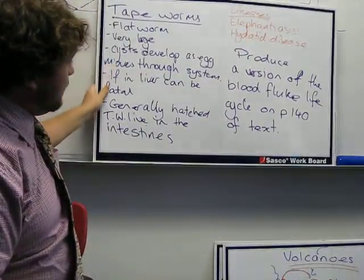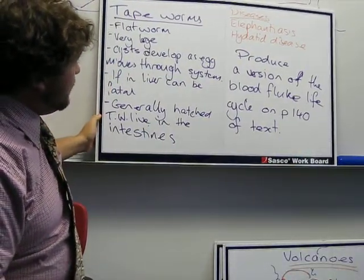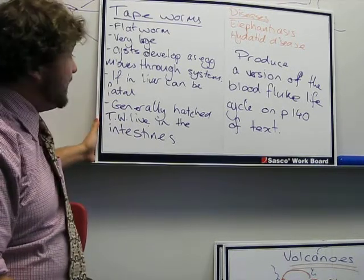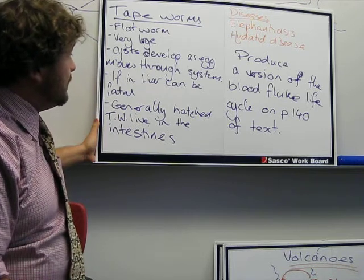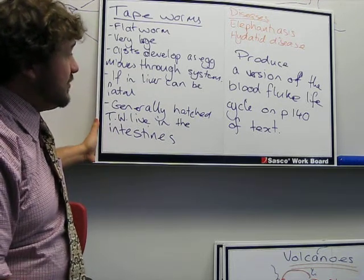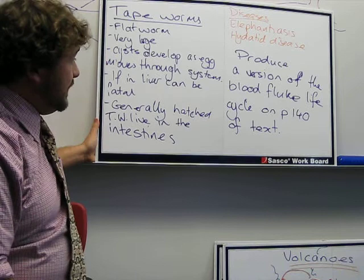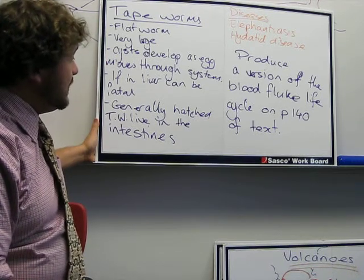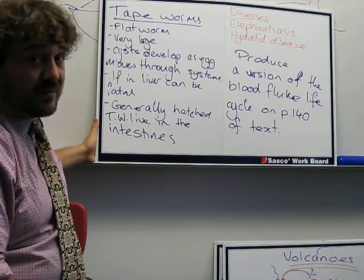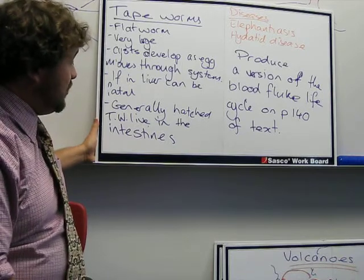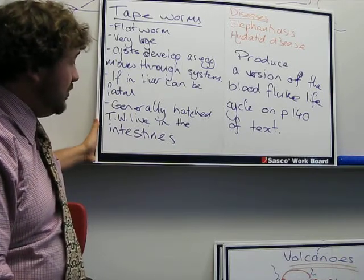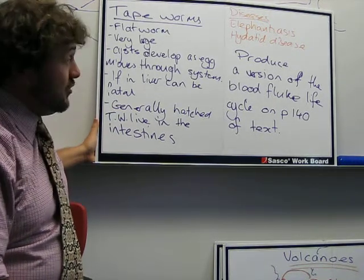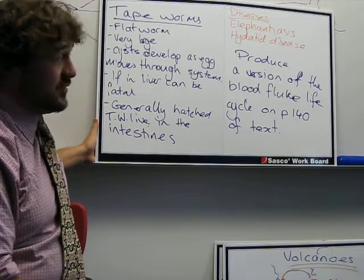Moving on to tapeworms — another type of flatworm, they're very large. They form a cyst, and this develops as the egg moves through the system. If the cyst forms in the liver, this is where it can be fatal. Once hatched, the tapeworm will tend to live in the intestines, and the first symptom is usually dramatic loss of weight.